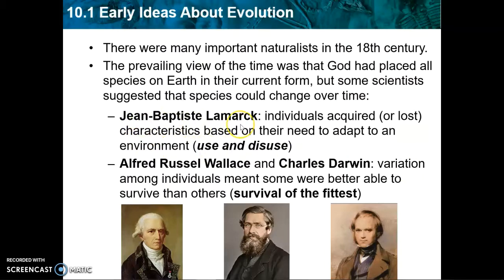Jean-Baptiste Lamarck was a French scientist who had the idea that species could evolve — that there was change over time — but he did not know the correct mechanism. His idea was use and disuse: if an individual used a specific body part, Lamarck thought it would get stronger or larger and then be passed down to offspring. If they didn't use something, it would shrivel up and disappear. We know that's not how genetics and inheritance works; with our current understanding, this is not the way evolution occurs.